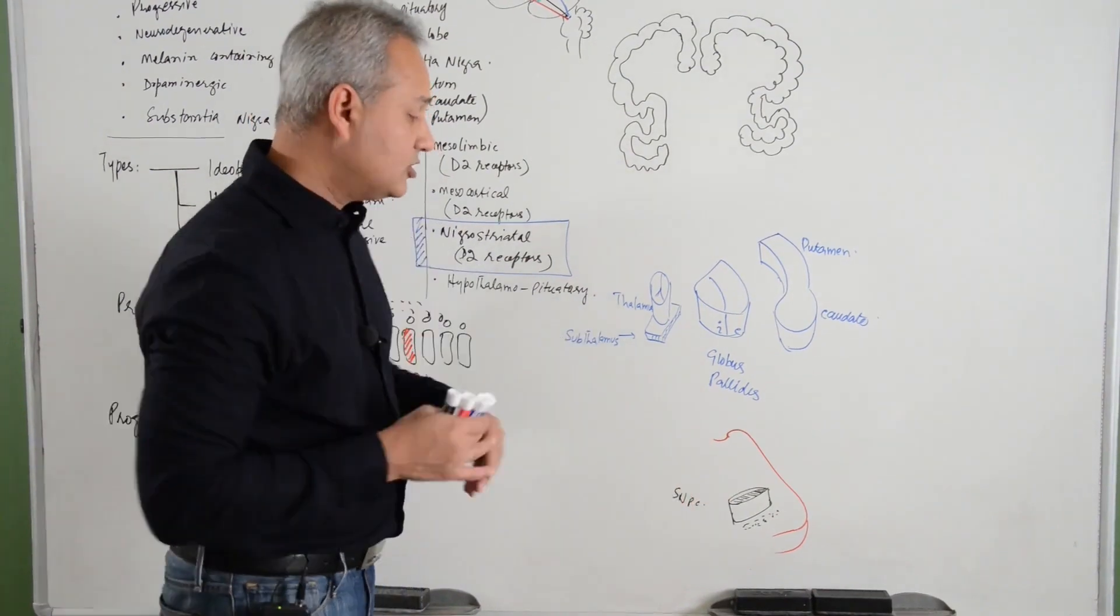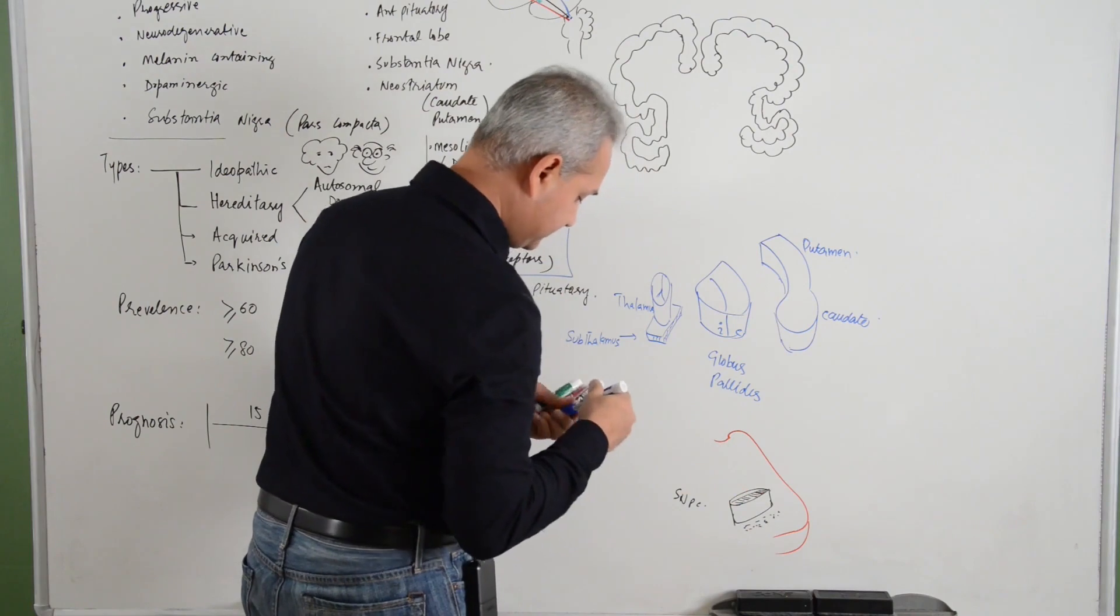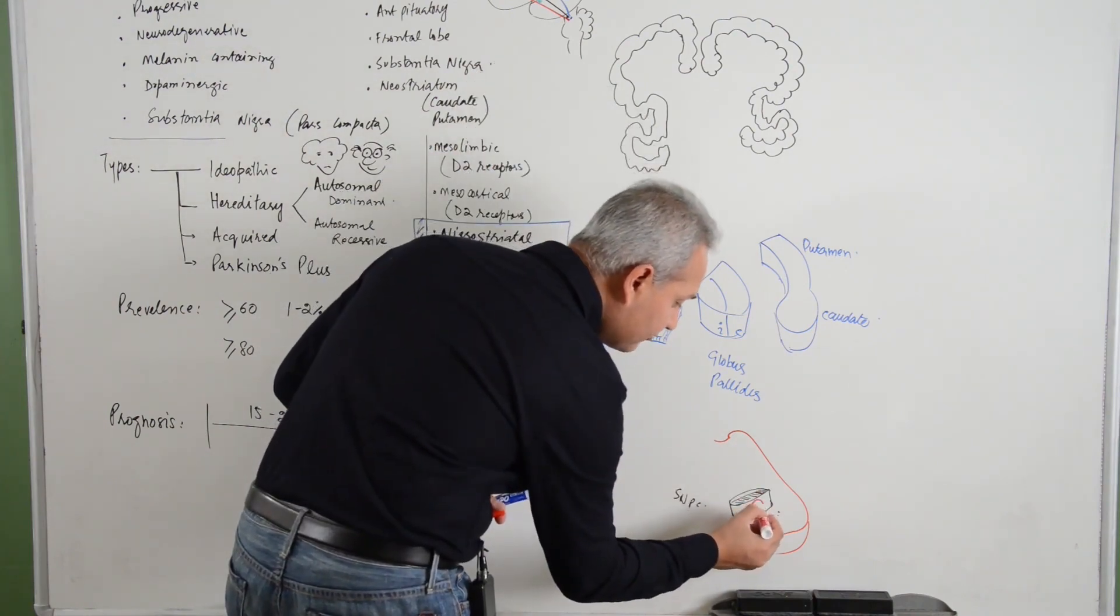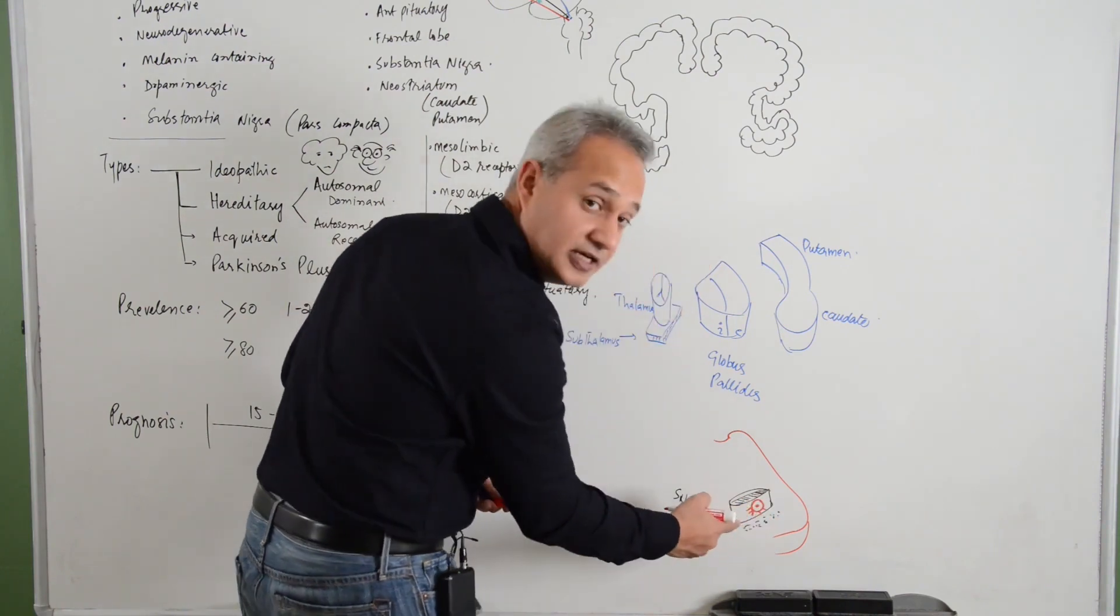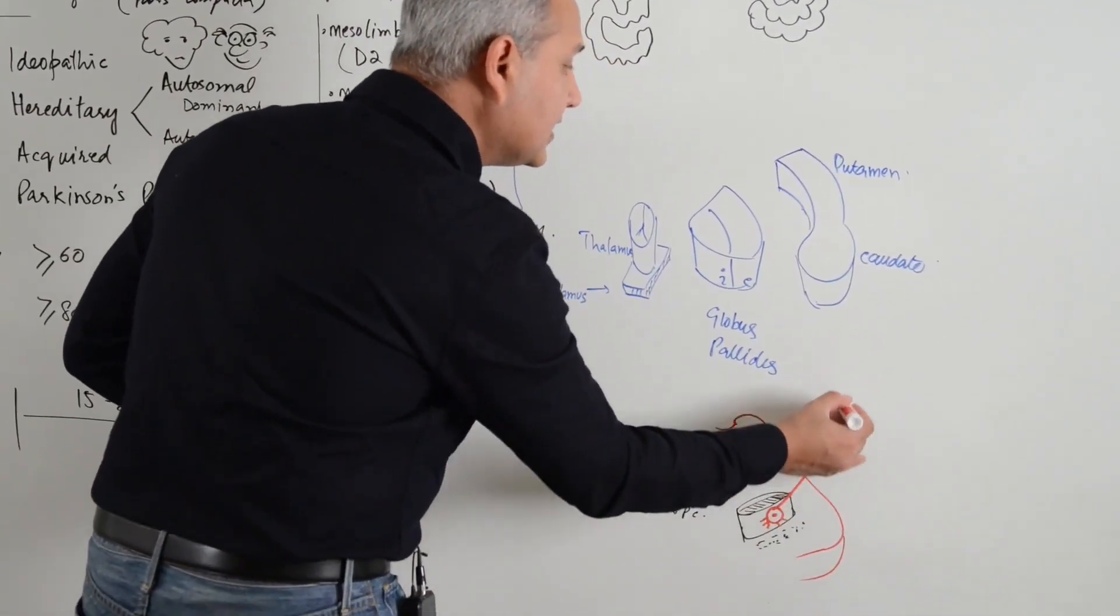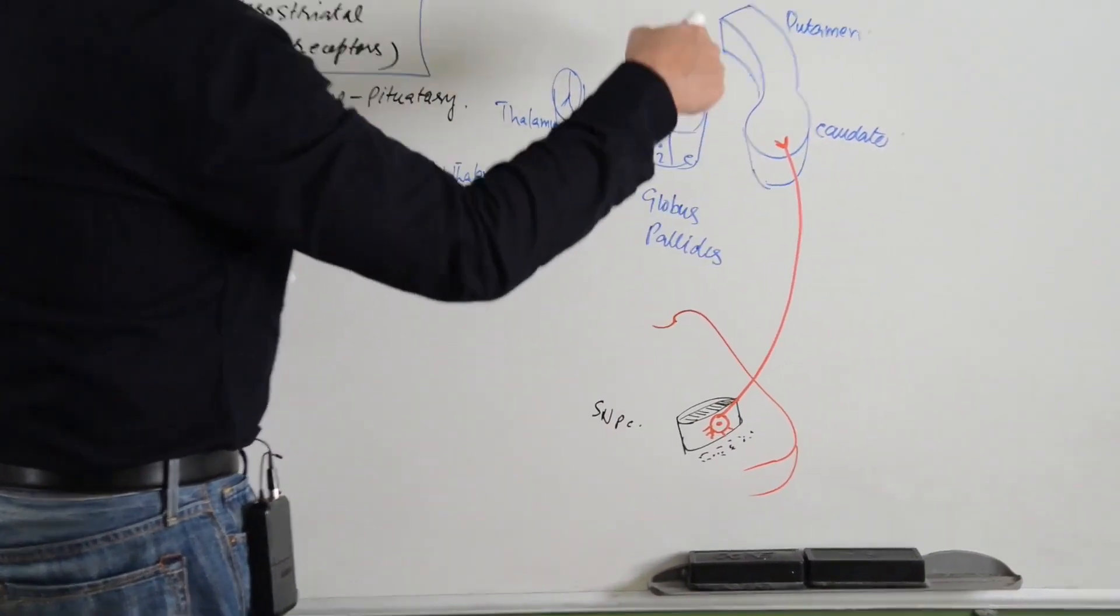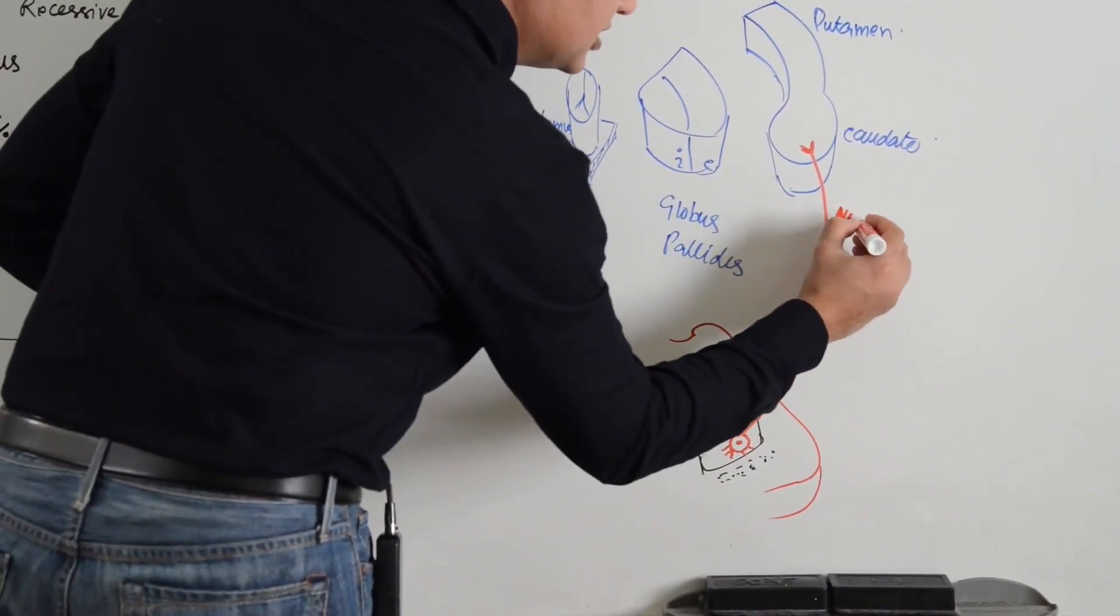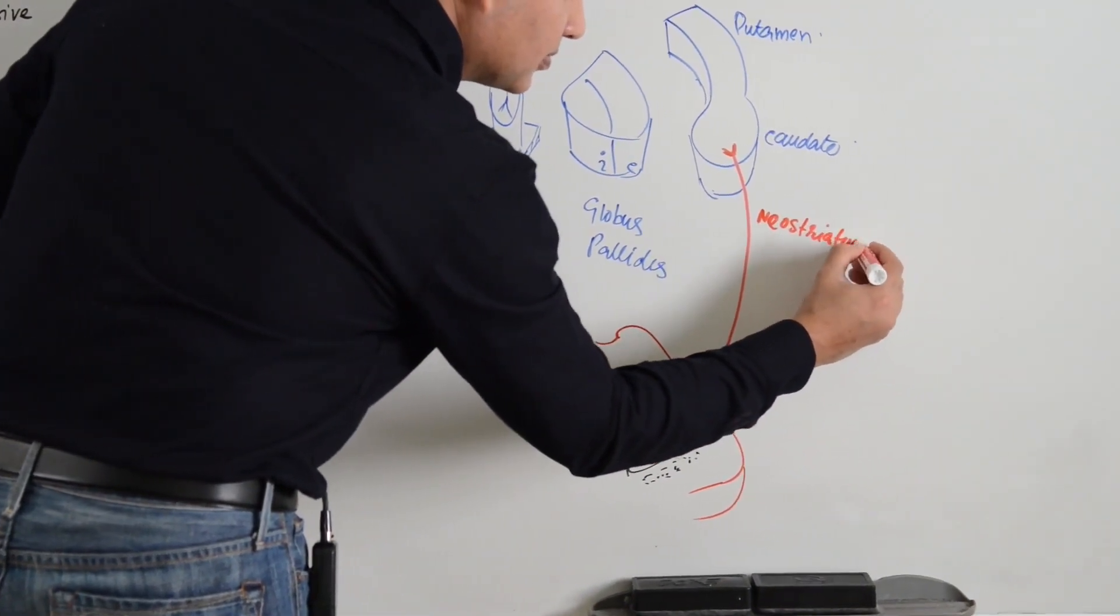Now the dopaminergic fibers that originate from here, the fibers originate from here, dopaminergic neurons. Cell bodies are present here in the substantia nigra. From there the fiber ends up in the neostriatum. This is important, neostriatum.